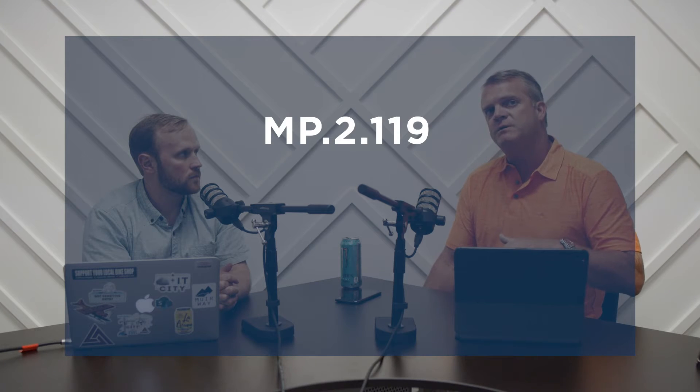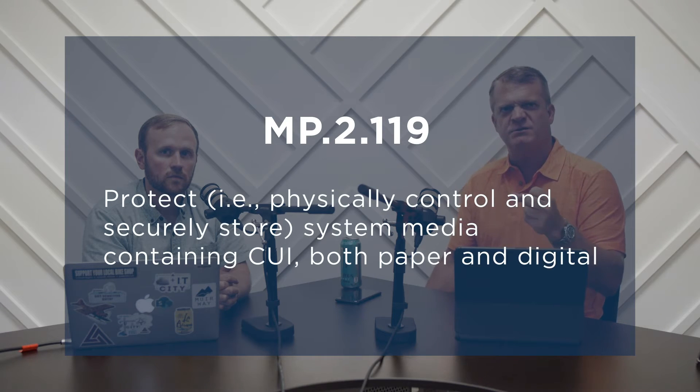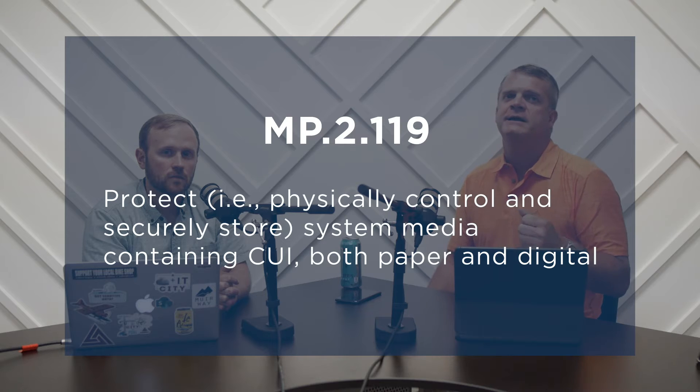MP2.119 talks about protecting the media and what's on it. Part of the control is where you store it — a safe place, a locker, a room. Also, is the device encrypted? Now, I don't think a phone qualifies as media because it's called out as a mobile device elsewhere. Some people are marking their phones with CUI, but I don't think that's mandatory.